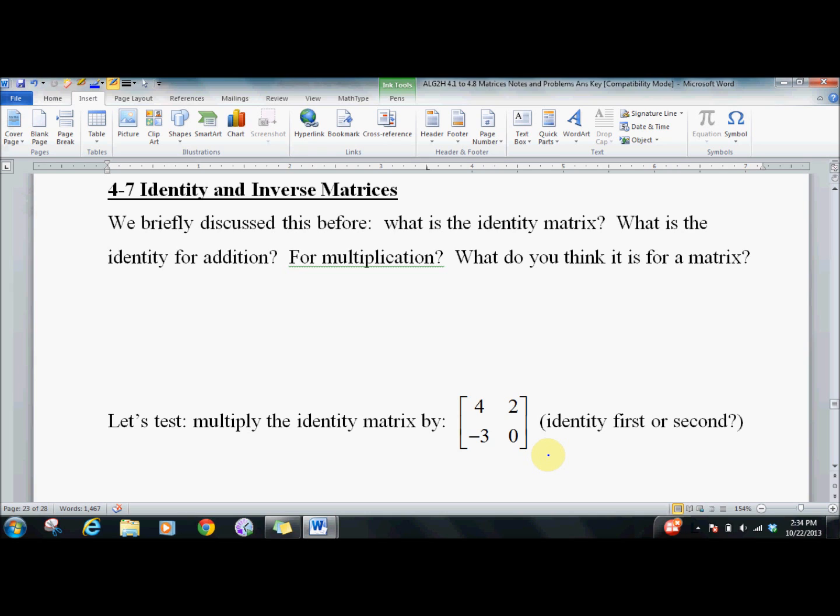So we talked about this briefly before. What's the identity matrix? Let's back up. What's the identity for addition? For addition, we have 4 plus something has to equal itself. That something is 0, so that's the additive identity. For multiplication, 4 times something equals 4. That's 1. That's the multiplicative identity.